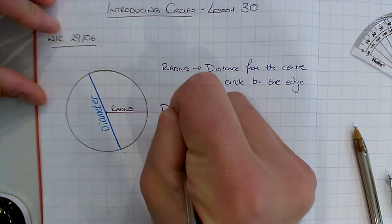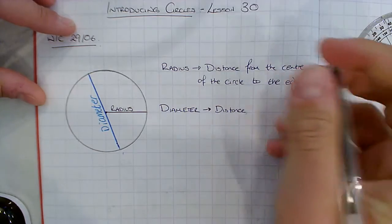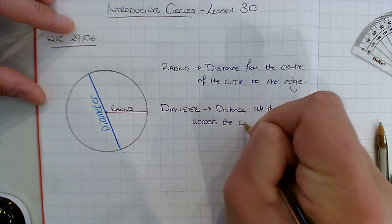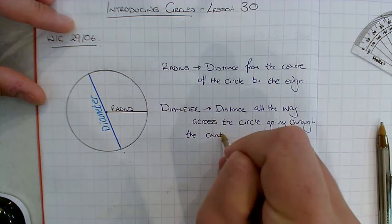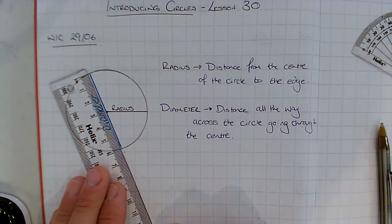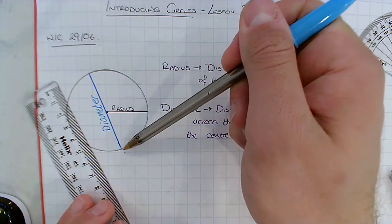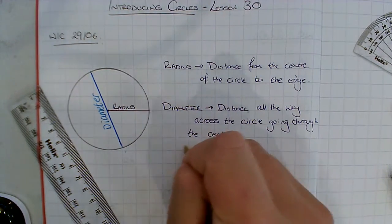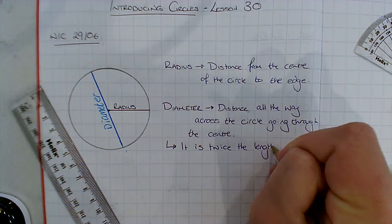A diameter is the distance all the way across the circle going through the centre. In this case, my diameter is six centimetres. That isn't a coincidence, because the diameter is made up of two radii — it goes from the centre to the edge, and I've also got a radius going from the centre to the edge on the other side. So it is twice the length of the radius.